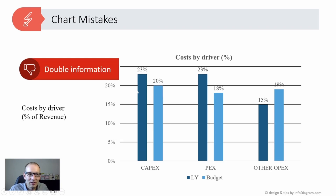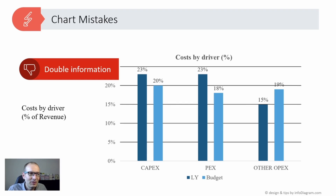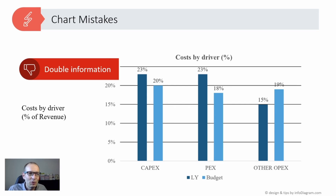Looking at this chart in its default form, we can notice one quite common mistake that I see people making on their data charts: they put the same information twice. There's a redundancy — the value showing that this first column is 23% and the second is 20% is written twice, once on the bar and once on the axis. We don't need both, and I'll show you how to decide which one to keep.